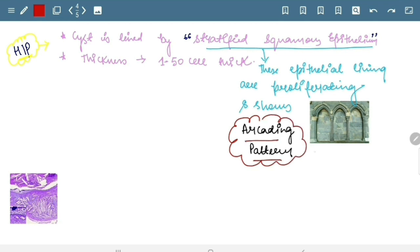Okay, so as shown in this picture, these are the arcading patterns. So these epithelial lining are shown like this. This is the shape of arcading. Okay.